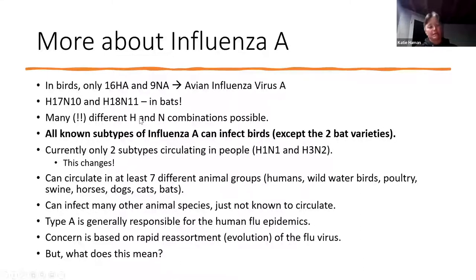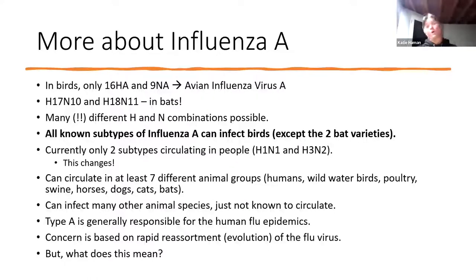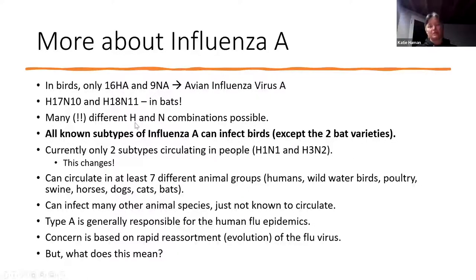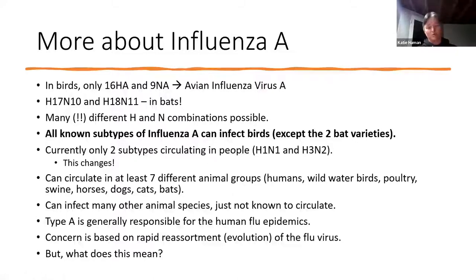There are many, many different combinations of H and N — you hear H5N1, which is the current outbreak in wild birds in North America and Europe. You can have H3N2, H8N1, and so on. That's one of the reasons why influenza A can be so significant: it readily reassorts and mutates and changes itself. These different combinations of H and N can recombine and genetically mutate even further.